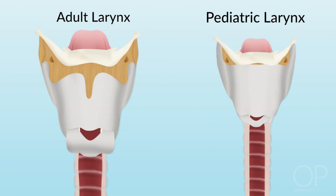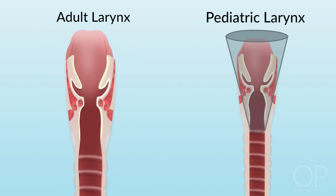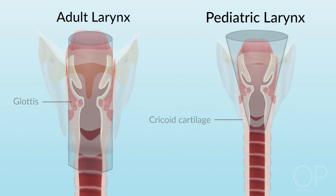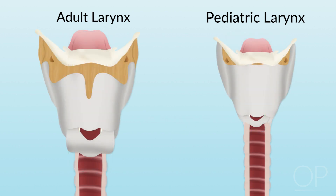The pediatric larynx differs from the adult larynx in several important ways. First, the pediatric larynx is funnel-shaped, with the most narrow point being the subglottis within the cricoid cartilage, whereas in an adult, the narrowest point is the glottis itself. Another important difference between the adult and pediatric larynx is that the laryngeal structures overlap in an infant, almost like sections of a telescope.